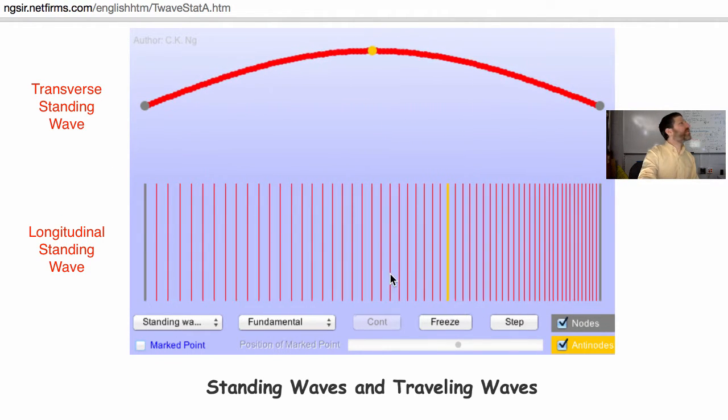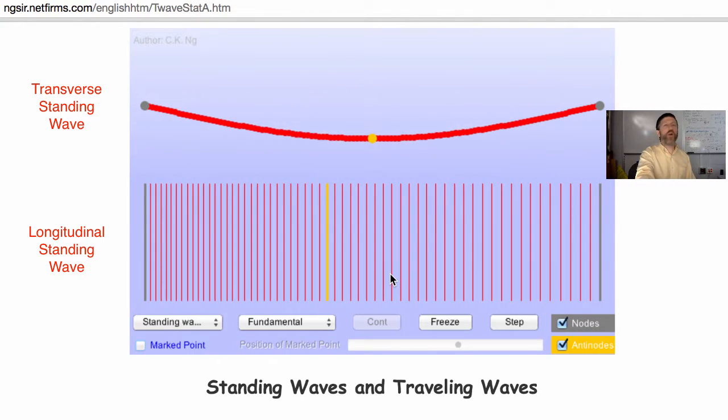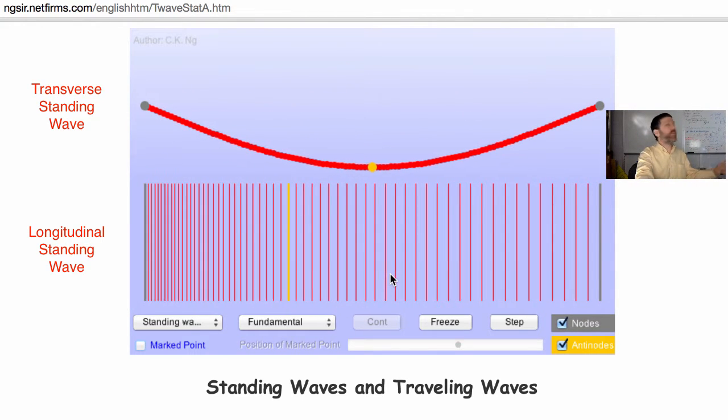How many antinodes does this have? One antinode. That's why n, the harmonic number, is one.